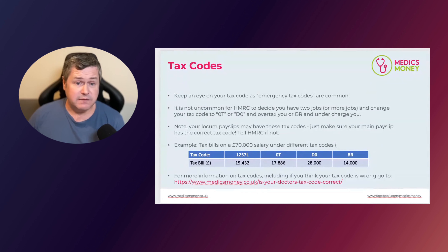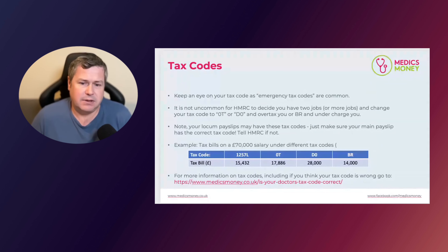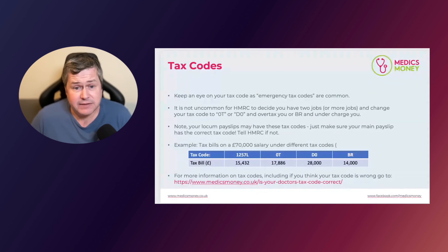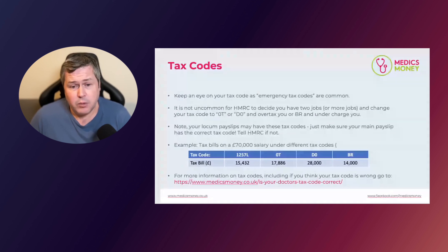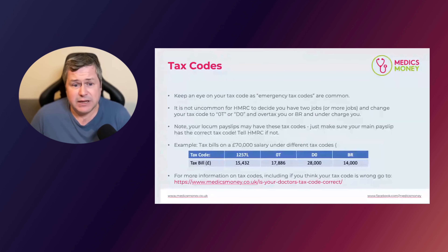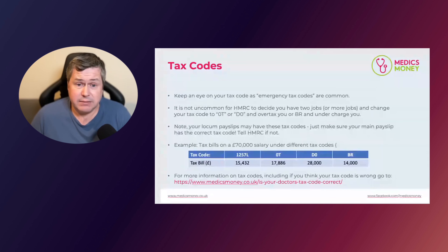It's also useful to know this for when your professional expenses change. For example, if you're paying £500 to the BMA and getting monthly tax relief through your tax code, but then cancel your subscription, you can use your personal tax account to let HMRC know and they'll adjust your tax code accordingly. Or if all your fees go up — GMC, Royal College, BMA — and you're entitled to more tax relief, rather than making a whole new tax claim, you can update the amounts in your personal tax account and HMRC will change your tax code to reflect the new expenses.